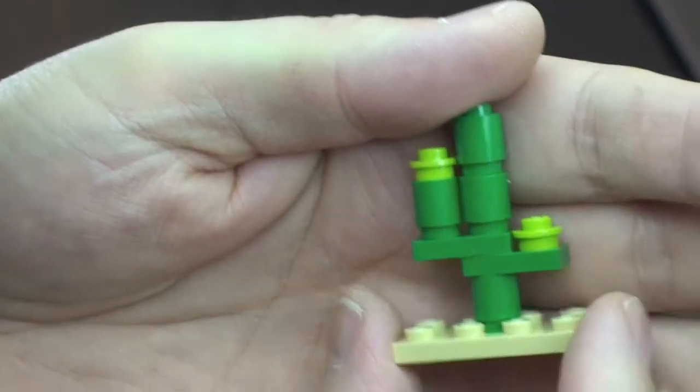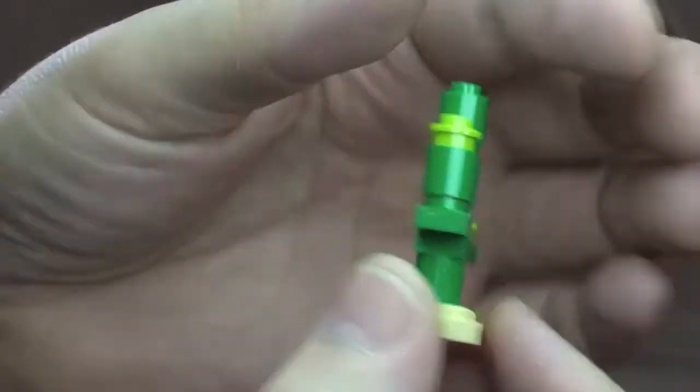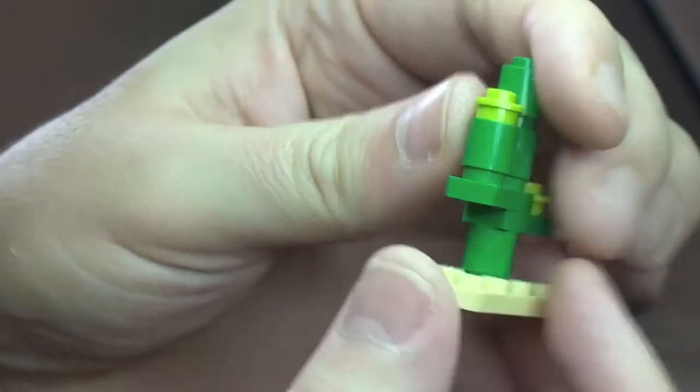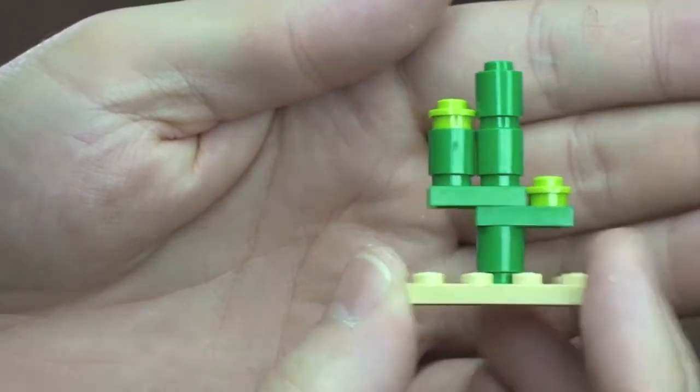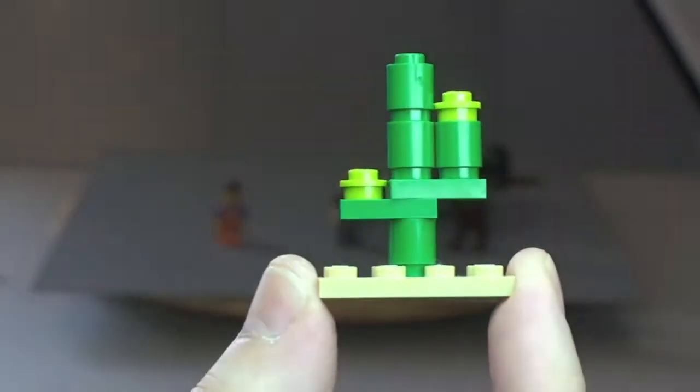Just very quickly, obviously it's a very simple build. You can see it was built but I think it does look quite good from a basic build. So that's obviously the cactus tree.